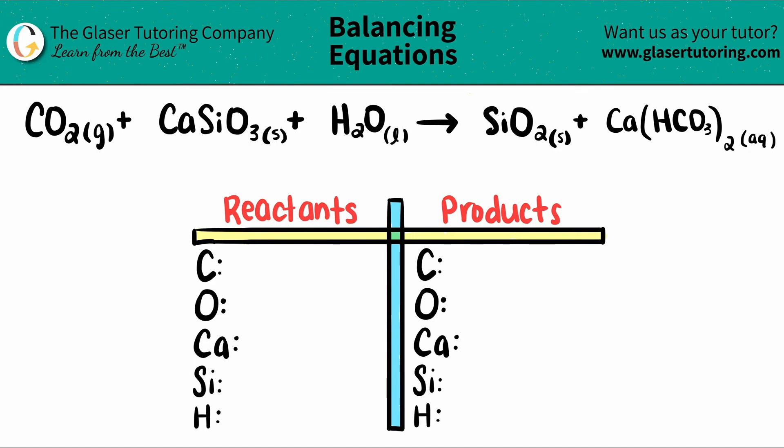Today, we're going to balance the equation of CO2 gas, which is carbon dioxide, plus CaSiO3 solid plus water, H2O liquid. And when those three things come together, they will produce SiO2 and then plus Ca(HCO3)2.